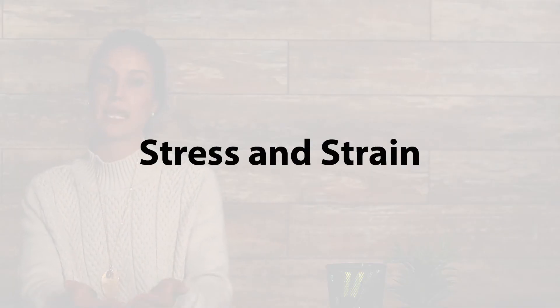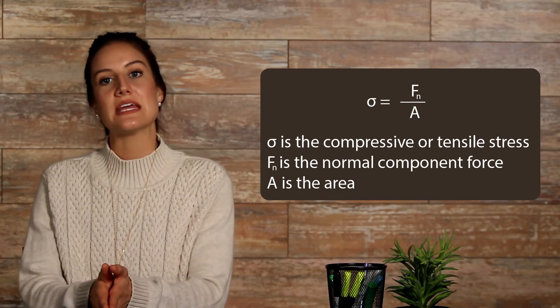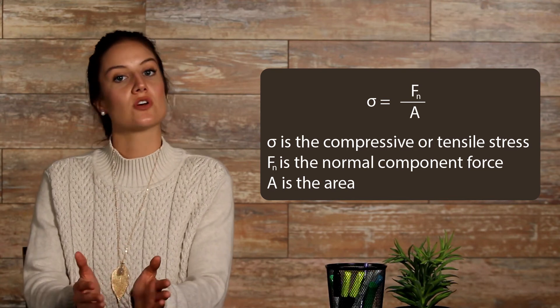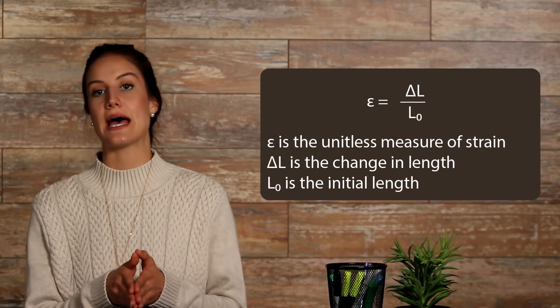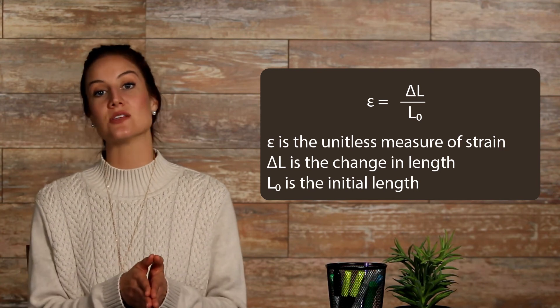Stress and Strain. In mechanics, stress is a quantity of force per unit area in or on an object. Tensile or compressive stress acts normal to the area of the stress, and is calculated with the following equation: sigma equals F-sub-n over A, where sigma is the compressive or tensile stress, F-sub-n is the normal component force, and A is the area. For example, if a rod is half an inch in diameter and is hit by a sledgehammer bearing 100 pounds of force, the stress can be calculated as sigma-sub-rod equals 100 pounds divided by pi times 0.25 inches squared. Strain is the deformation of an object due to stress, expressed by: epsilon equals delta-L over L-sub-0, where epsilon is the unitless measure of strain, delta-L is the change in length, and L-sub-0 is the initial length.